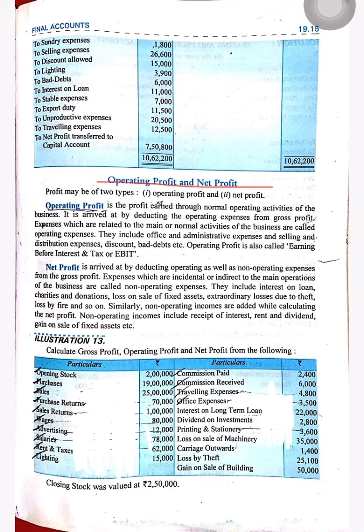Operating profit is the profit earned through normal operating activities of the business. It is arrived at by deducting operating expenses — such as wages and other expenses necessary to run the business — from gross profit. Expenses related to the main normal activity, including office and administration expenses and selling and distribution expenses, are called operating expenses. Operating profit is also called Earnings Before Interest and Tax, or EBIT.